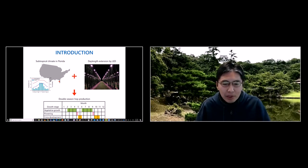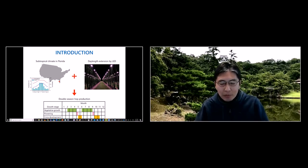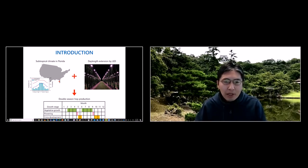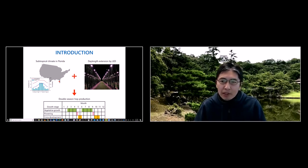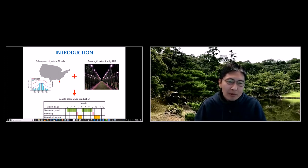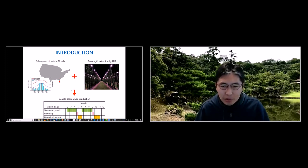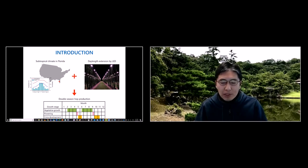My name is Shinsuke Agahara; I'm a plant physiologist at the University of Florida. I mainly work on different vegetable and small fruit crops like strawberry, but since 2016 I've been studying how to grow hops in the subtropics. My research center is located in west central Florida, about 20 miles southeast of Tampa — the latitude is about 28 degrees north. We don't have sufficient day length to promote good vegetative growth before flower induction, so we use LED supplemental lighting to extend day length and control the timing of flowering. Combined with the subtropical climate, we found we can grow hops twice a year.